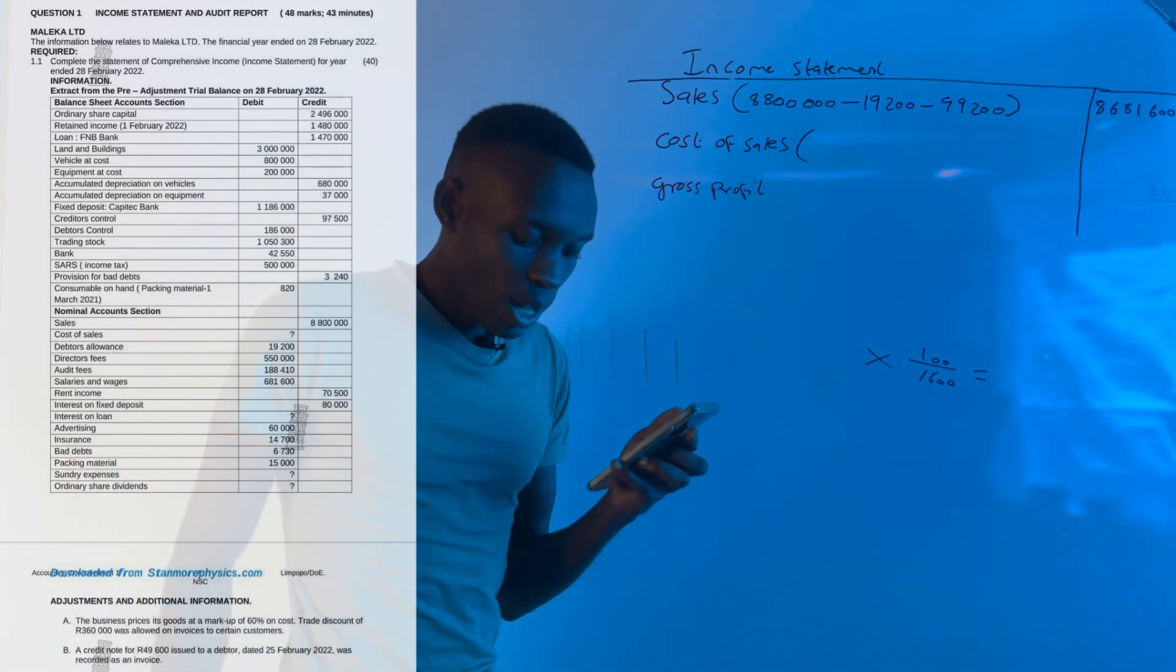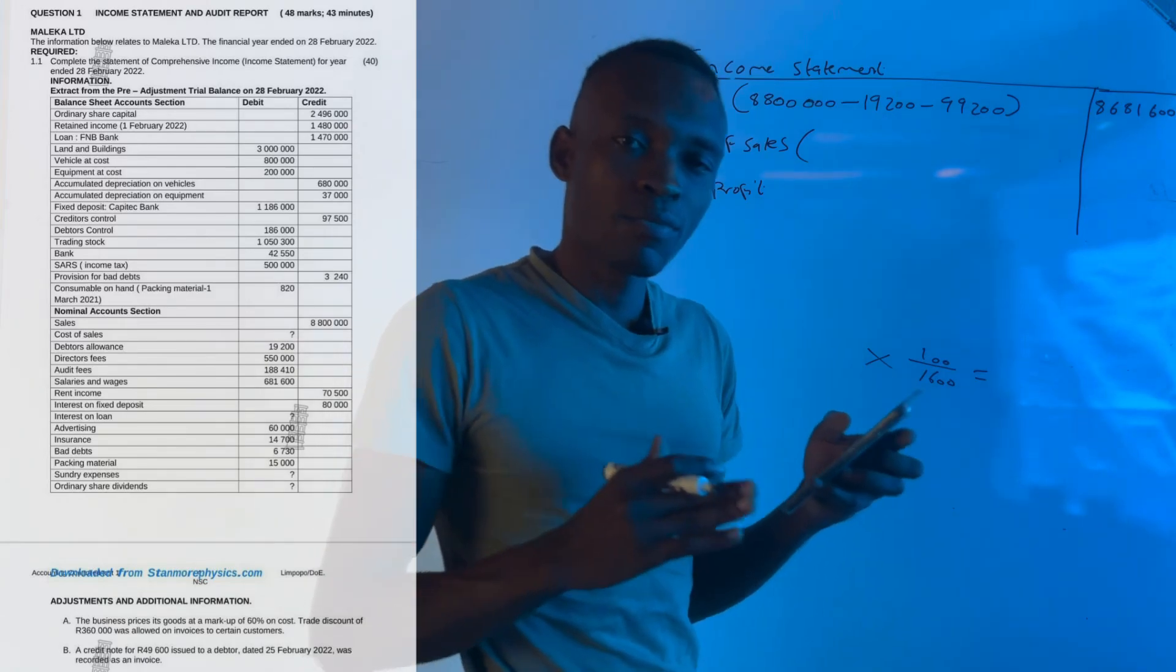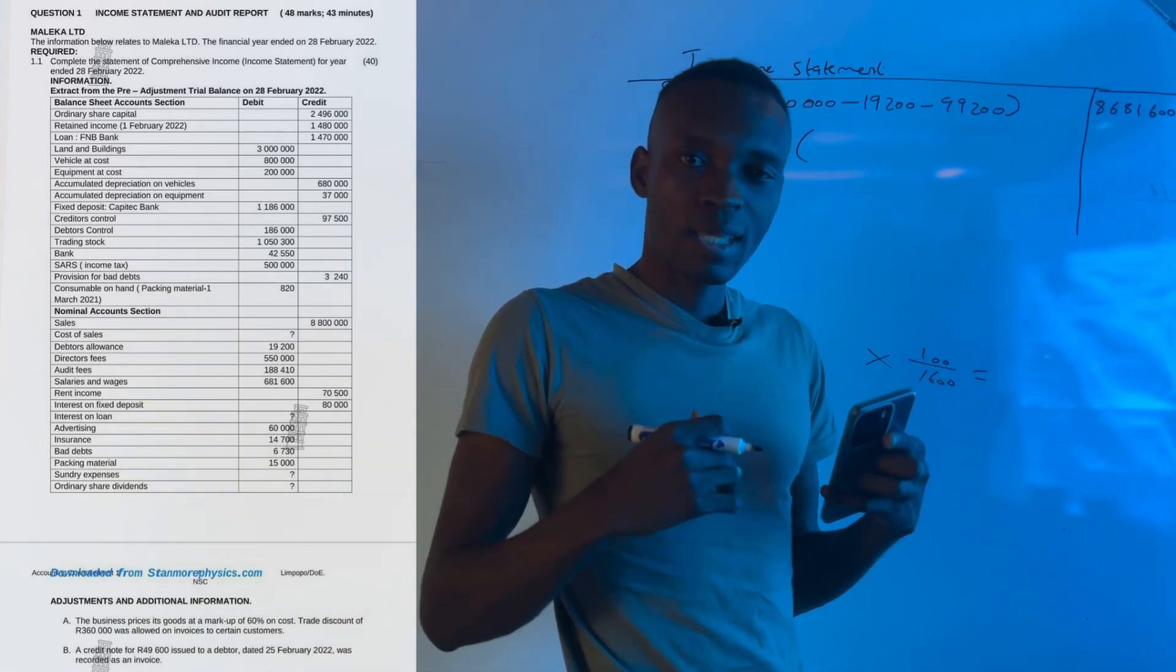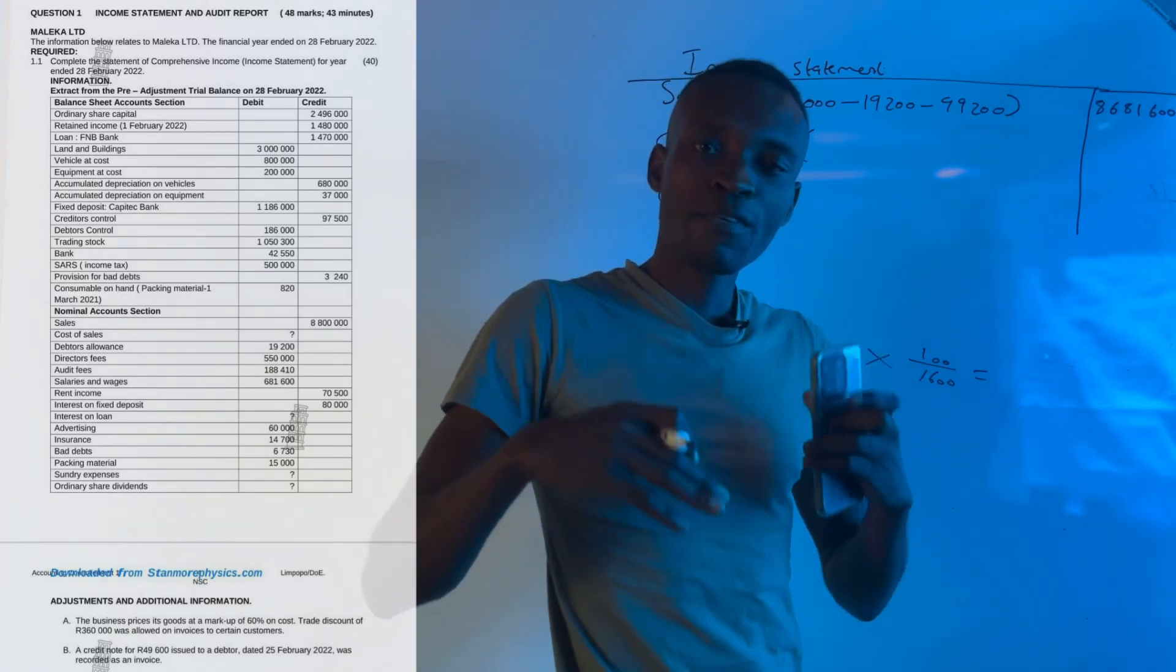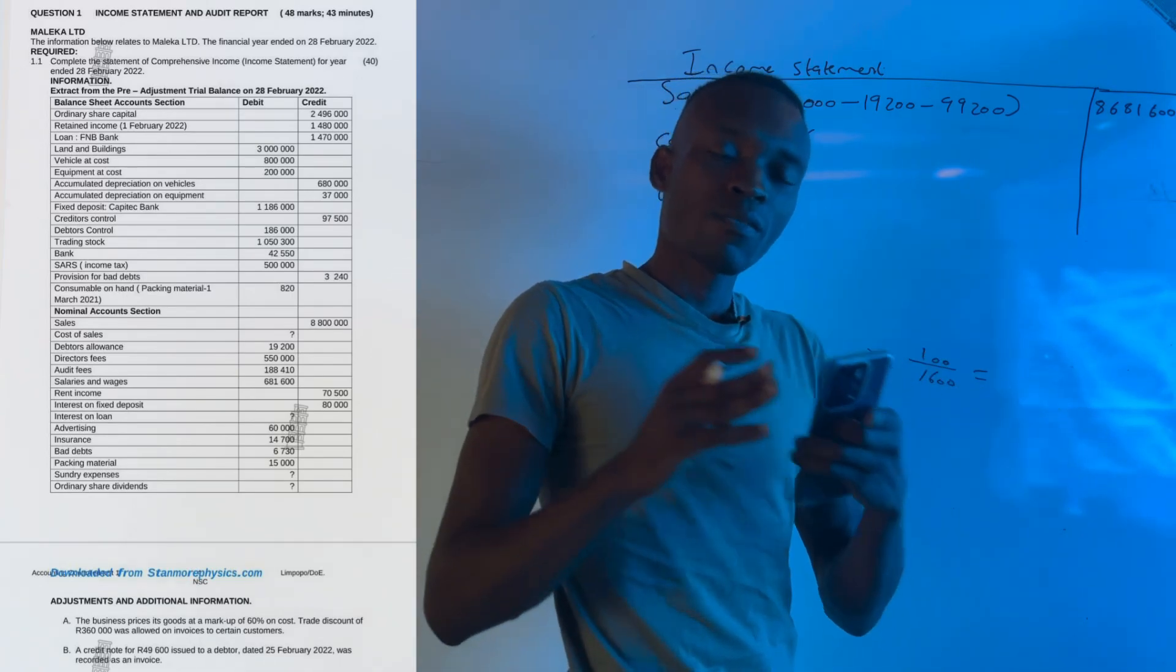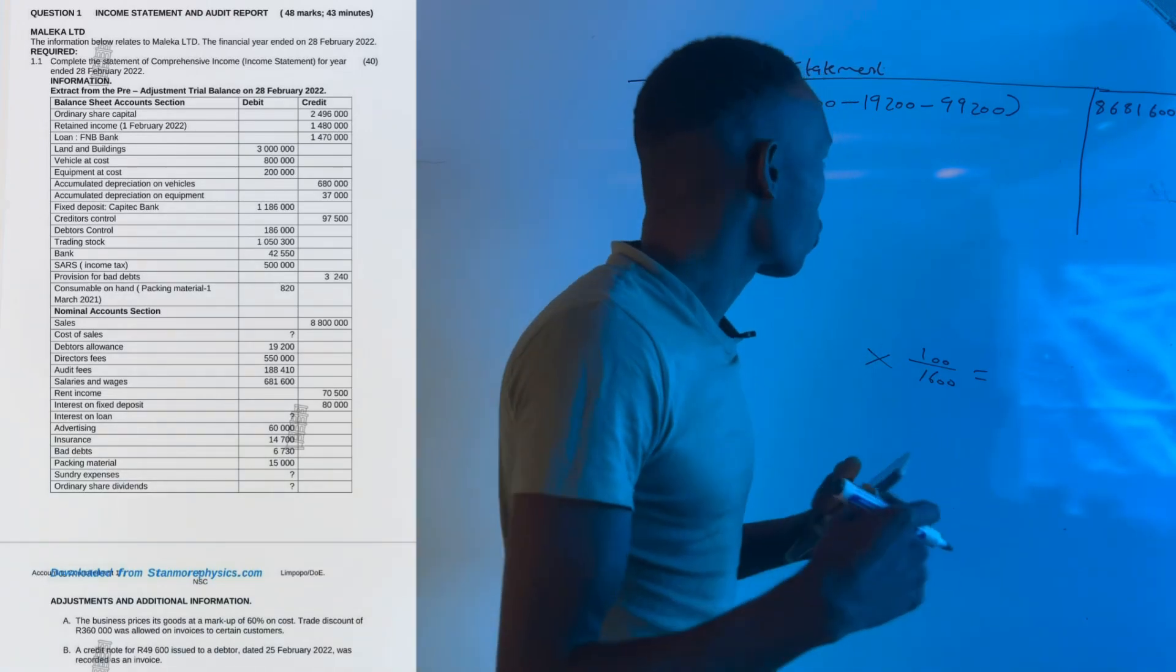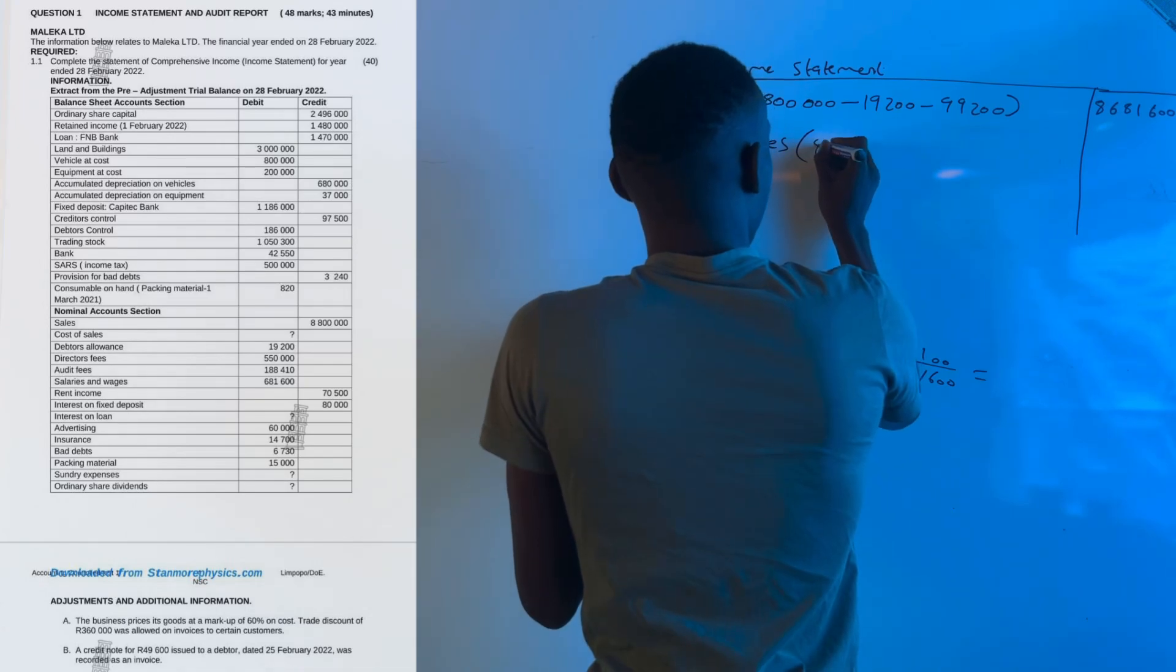But remember, from the sales amount we need to adjust 360 of trade discount. Why? Because this amount we didn't receive - we gave them discount, which means it costed us. That's why it's not affecting sales but affecting cost of sales.